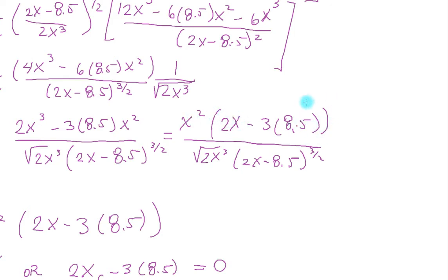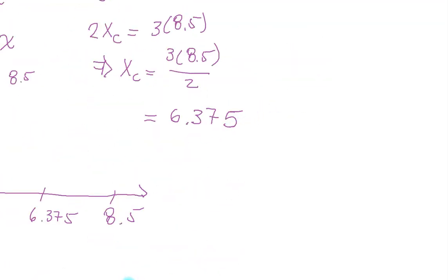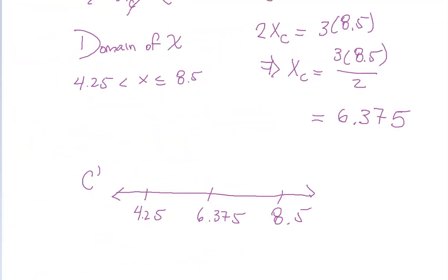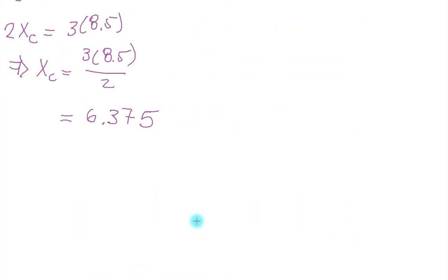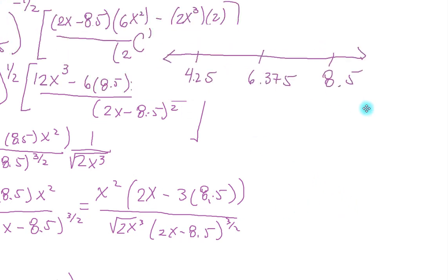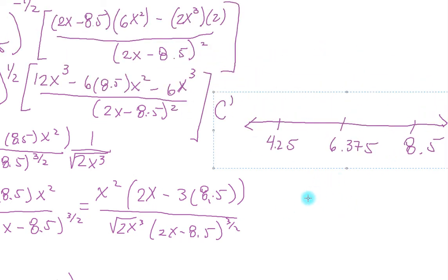Now let's go to the top. If we get a value between 4.25 and 6.375, let's say 5, this is always positive. So we only have to worry about this. 2 times 5 is 10 minus 3 times 8.5 is clearly bigger than 10, so this is negative.